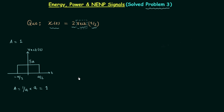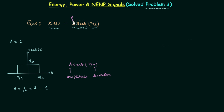Rectangular signals in general have the notation A·rect(T/τ), where A is the amplitude and τ is the duration for which the signal amplitude is not zero — i.e., equal to A. Comparing this standard notation with our signal, the amplitude is 2 and τ, the duration for which signal amplitude is 2, is also equal to 2.